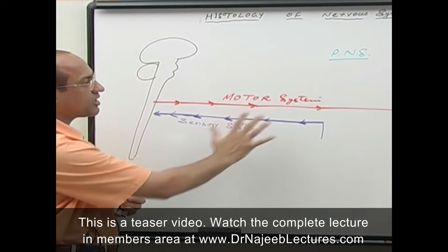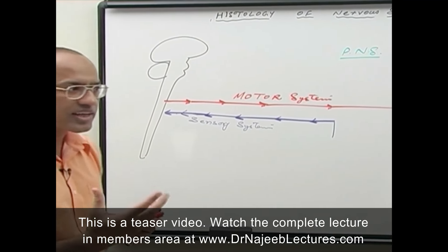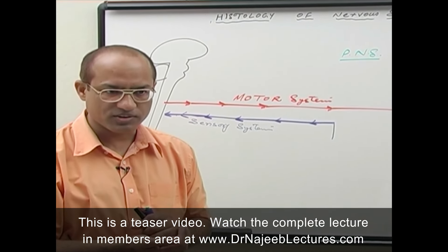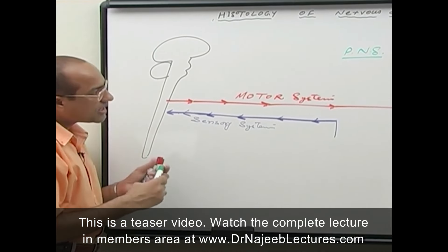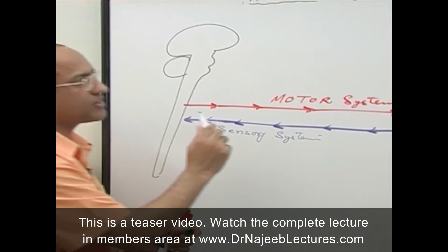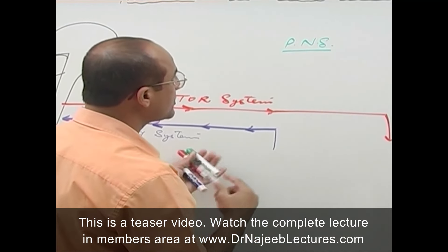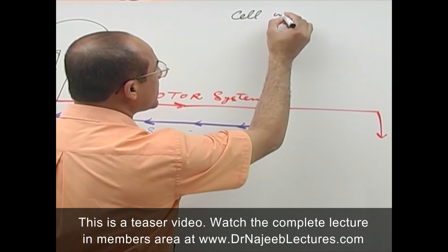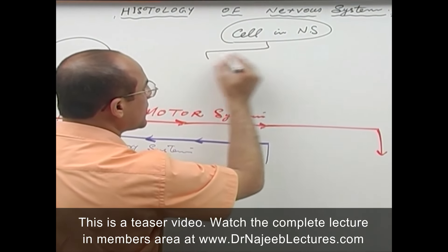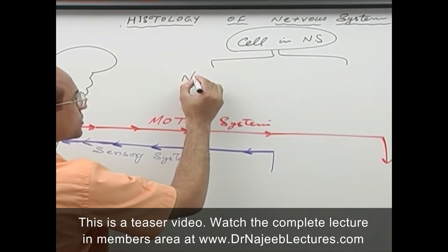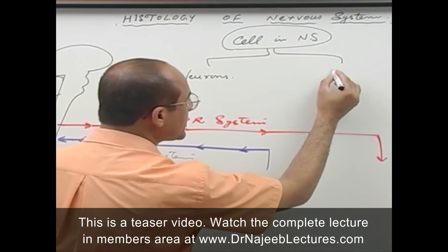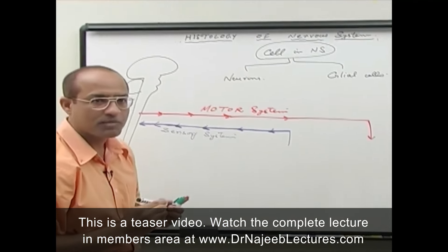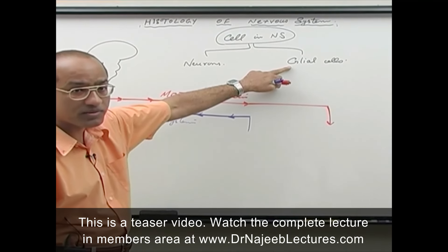All parts of the nervous system have cells which conduct electrical impulses — action potentials. When you talk about histology, you talk about the types of cells. There are two types of cells present in the nervous system: neurons and glial cells. Glial cells are the supporting cells in the central nervous system, while Schwann cells and other cells support the peripheral nervous system.